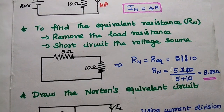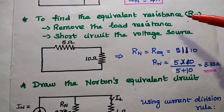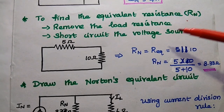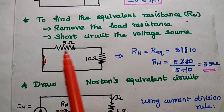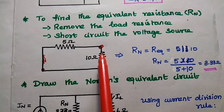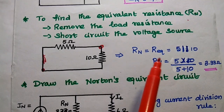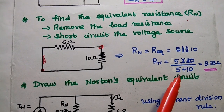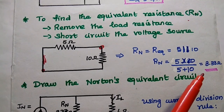The next step is to find the equivalent resistance Rn. We remove the load resistance (6 Ohm) from the given circuit and short circuit the voltage source. Now both ends of the resistors are connected together, meaning both resistors are in parallel. The equivalent resistance equals 5 parallel with 10 Ohm, which is 5 multiplied by 10 divided by 5 plus 10. Therefore, Natan's equivalent resistance equals 3.33 Ohm.